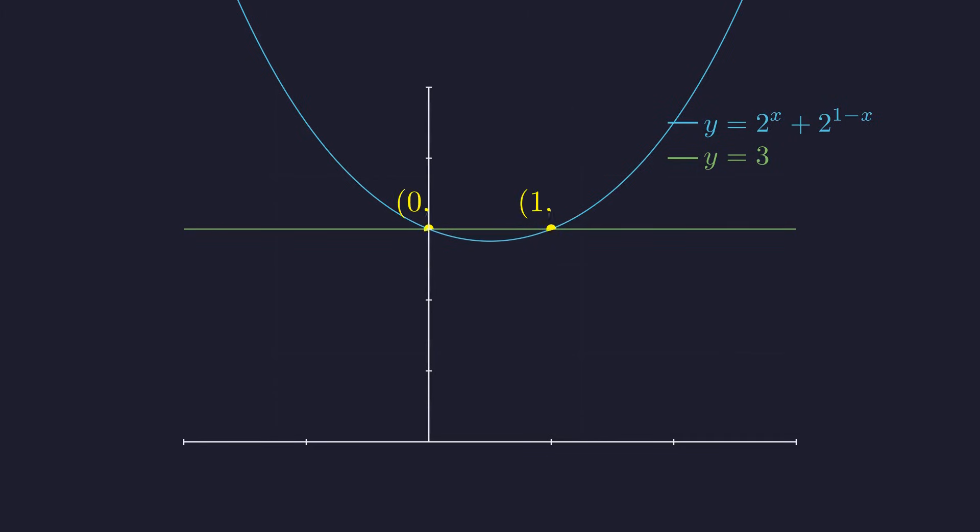The coordinates of these intersection points are (0, 3) and (1, 3). This confirms that our algebraic solutions x equals 0 and x equals 1 are correct.